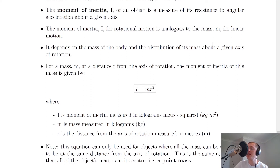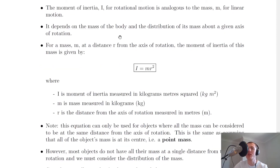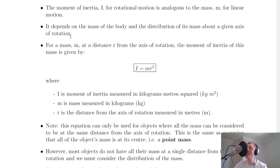In a previous video we compared linear versus angular motion, and this is doing the same thing here. So moment of inertia I is basically just the angular form of mass. An important point to note is that it depends on the mass of the body and the distribution of its mass about a given axis of rotation. So how easy or difficult it is to rotate something will depend on the mass of that body and how close to or further away from the axis that mass is.